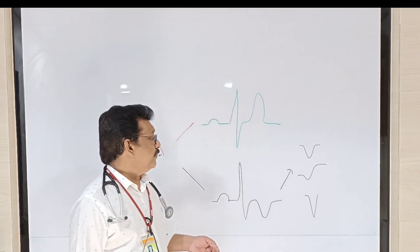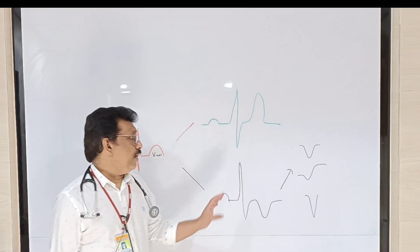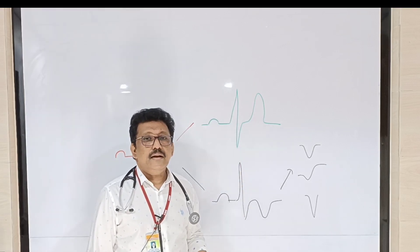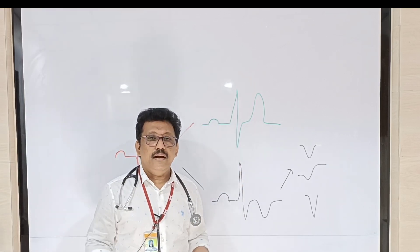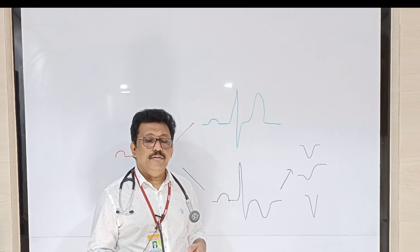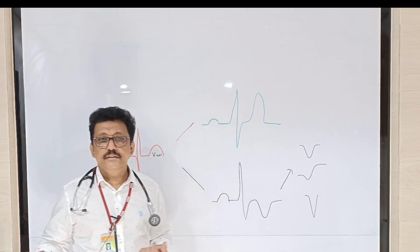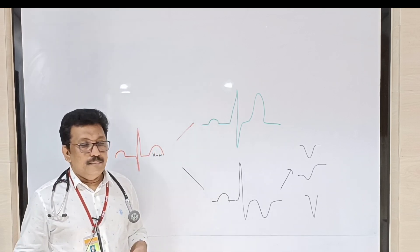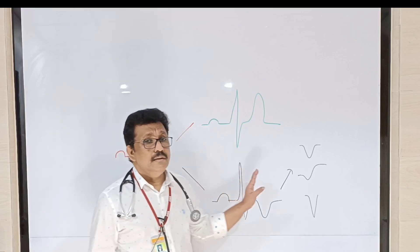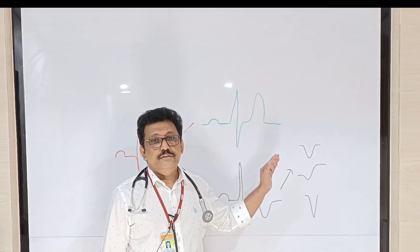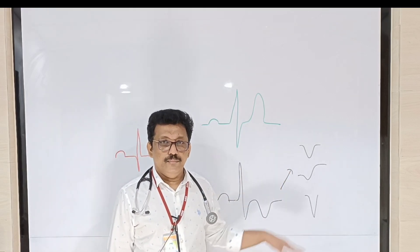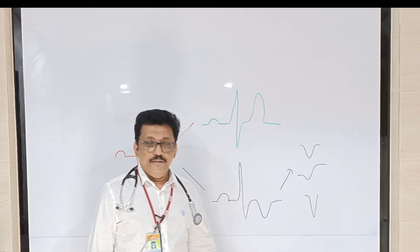To summarize: tall T waves indicate hyperkalemia or hyperacute MI; inverted T waves always indicate ischemic heart disease, especially when symmetrical limbs are present; asymmetrical limbs in T wave inversion can be due to LVH or RVH. We have discussed the most common problems in T wave. There are multiple other abnormalities in T waves if you learn ECG in depth, but these are the most important things we should not miss in the emergency room. Thank you.